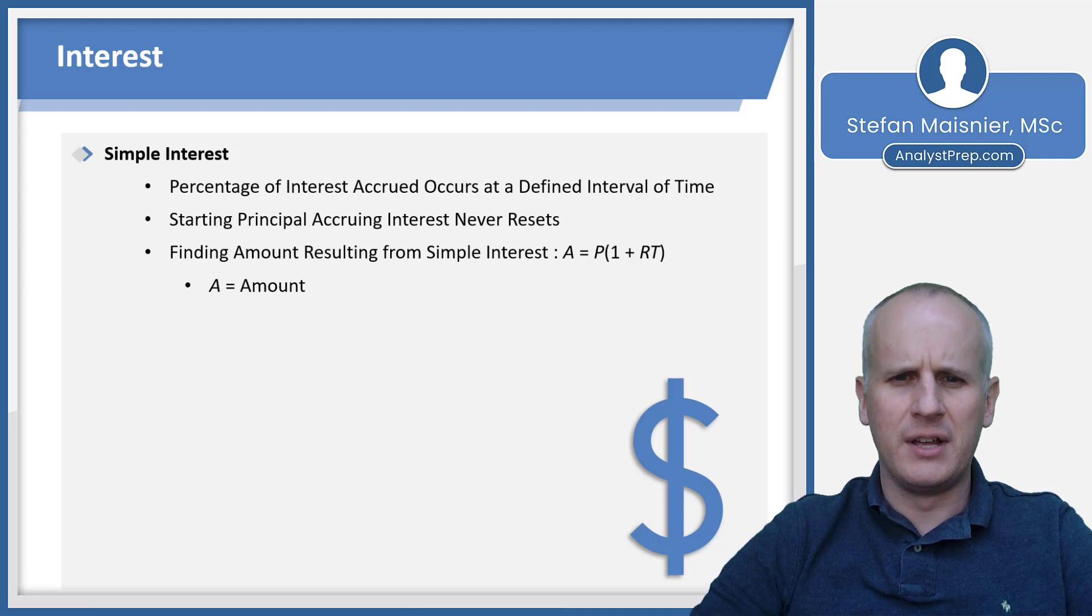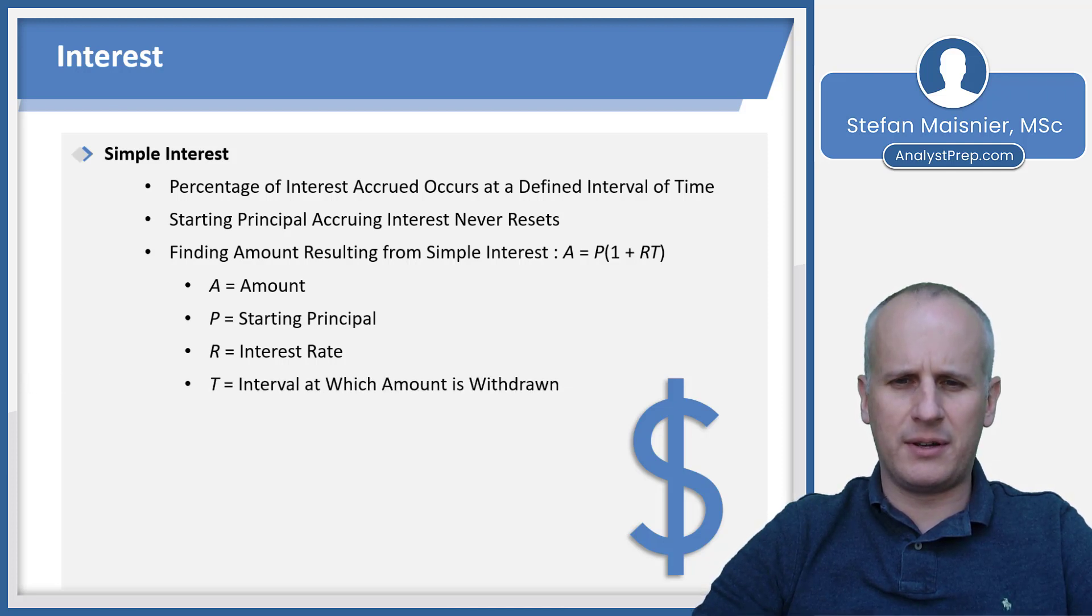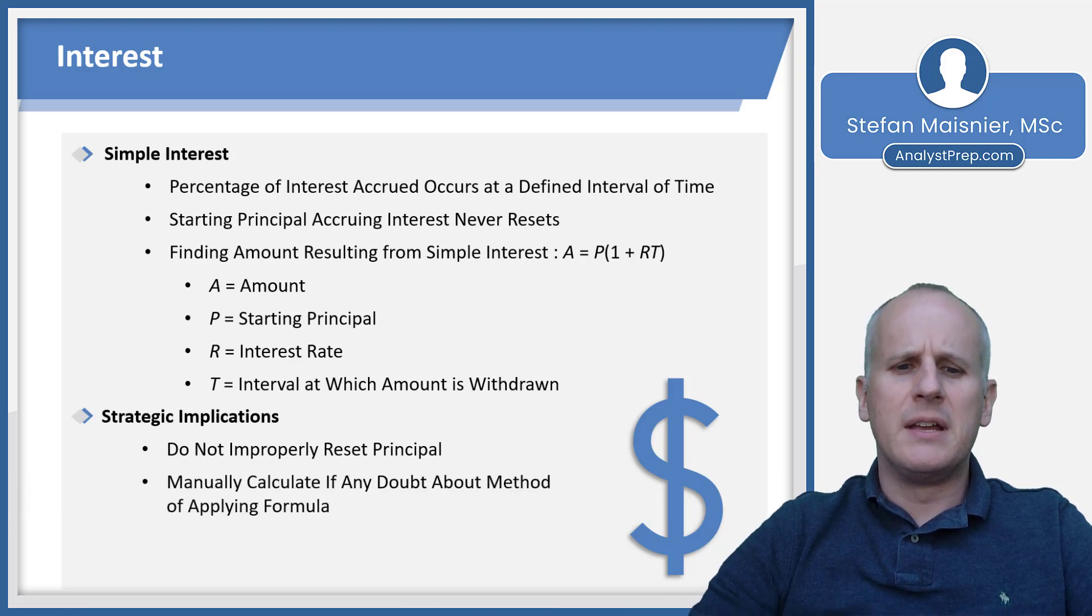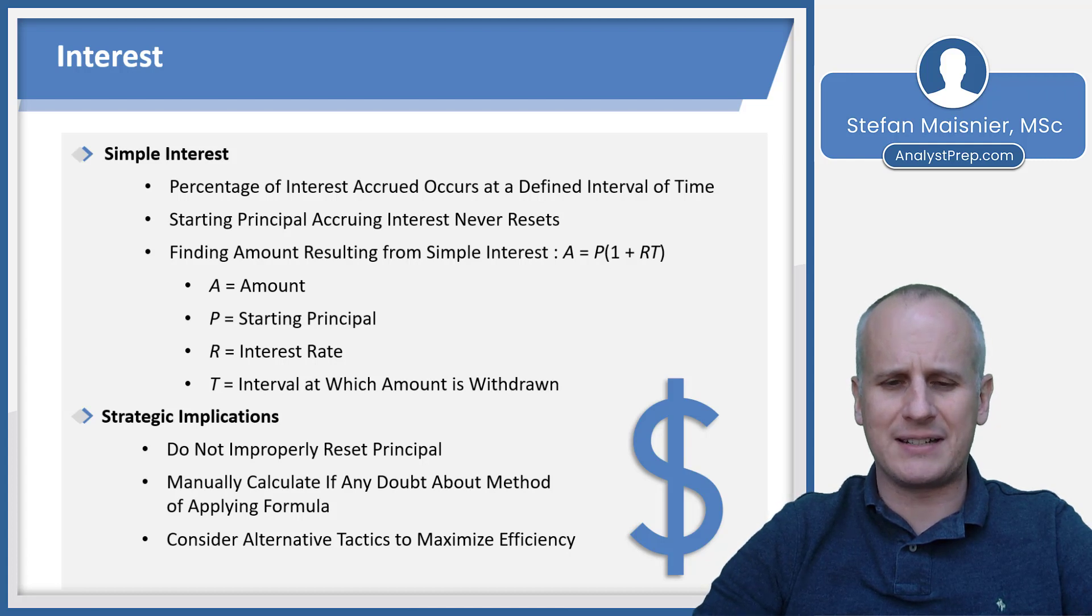Let's define the pieces here. The amount that results is the A. The starting principle is P. The R is the interest rate, and then T is the interval at which the amount is withdrawn. The 1 just indicates the original amount. Strategically, don't improperly reset the principle. If it's a simple interest problem, you just have to keep it as is at the beginning. You can manually calculate without the formula if you have any doubts about how to apply the formula or just fail to remember it in the moment. And you can consider alternative tactics to maximize efficiency.